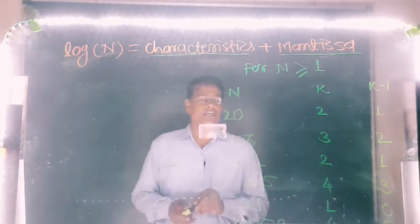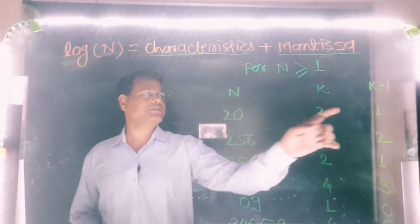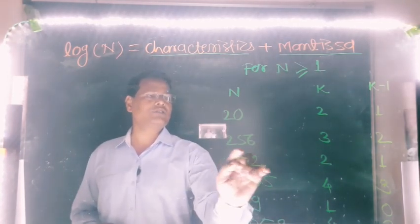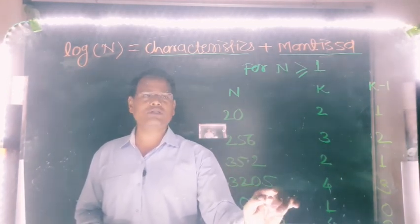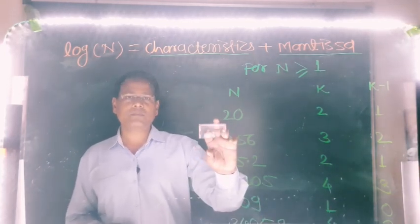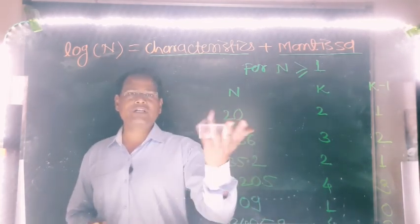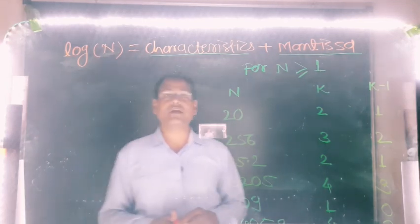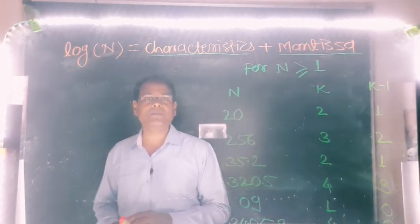In simple words: if you have a 2-digit number, its characteristic will be 1. If you have a 3-digit number, its characteristic is 2. If you have a 4-digit number, its characteristic is 3. If the number is a 10-digit number, its characteristics will be 9. And if the number has 100 digits, its characteristics will be 99.